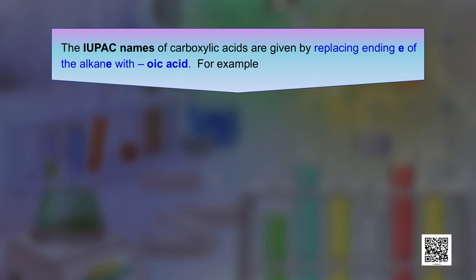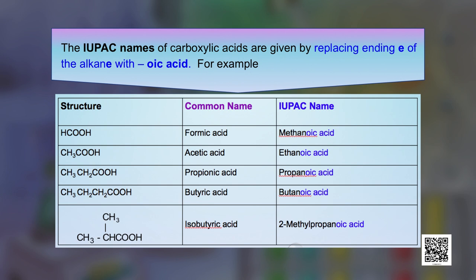The IUPAC names of carboxylic acids are given by replacing the ending '-e' of the alkane with '-oic acid'. For example, formic acid comes from the alkane methane — we replace the final 'e' of methane with '-oic acid' and get the name methanoic acid. Similarly, for ethanoic acid, the word comes from ethane, replacing 'e' with '-oic acid'. You can also see their common names — acetic acid and formic acid respectively — in the table.